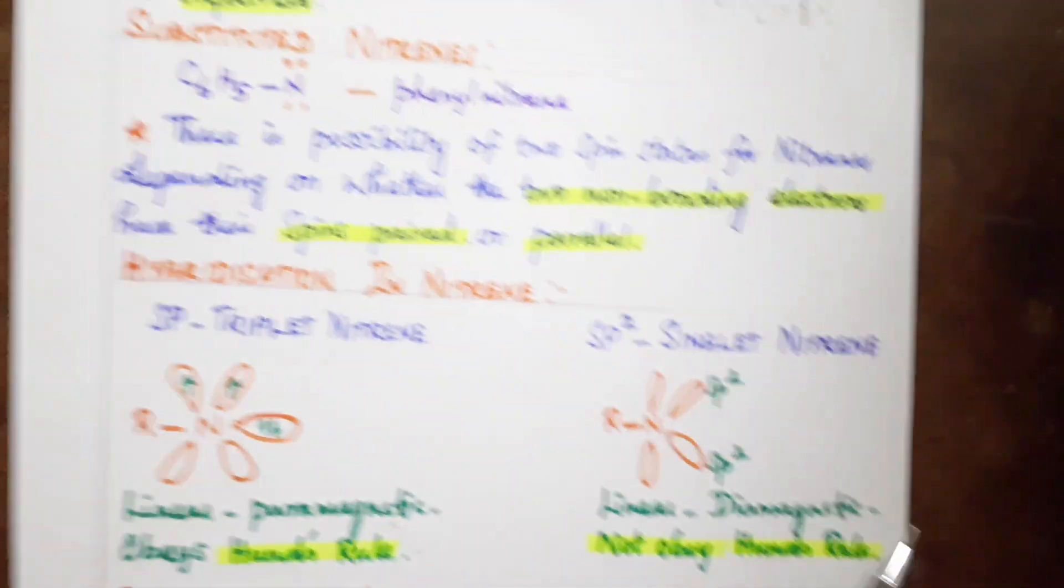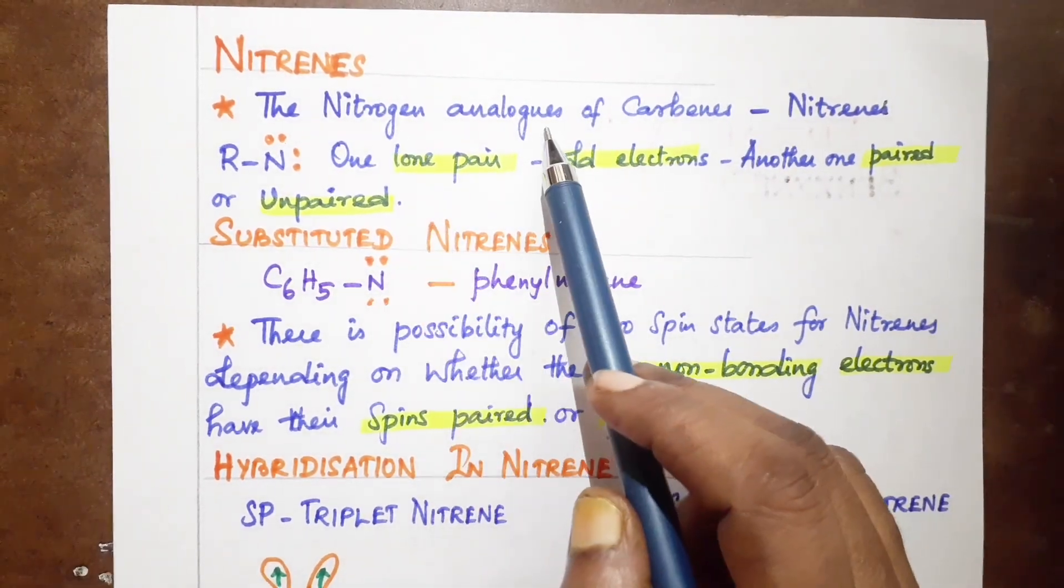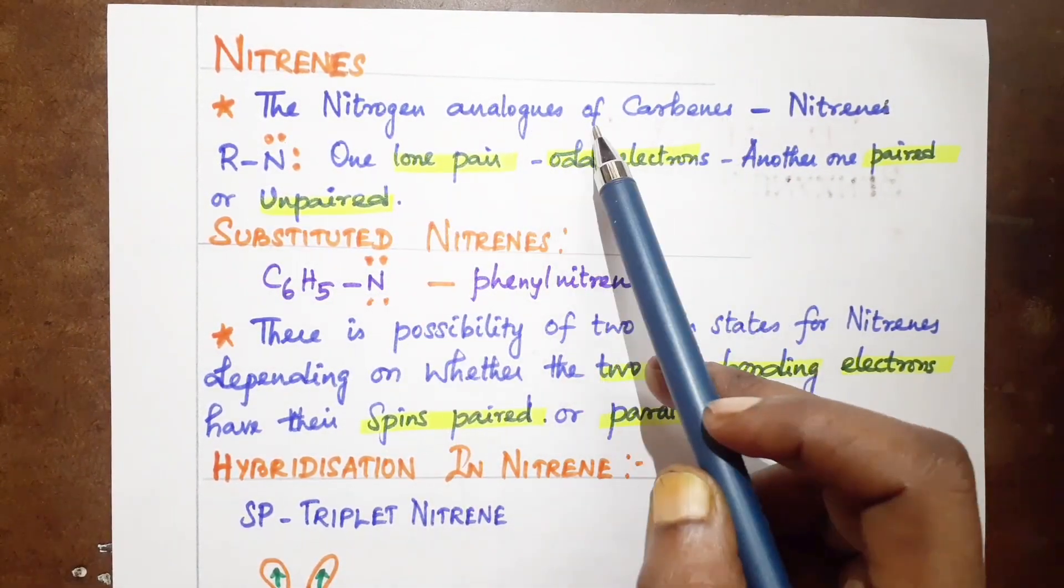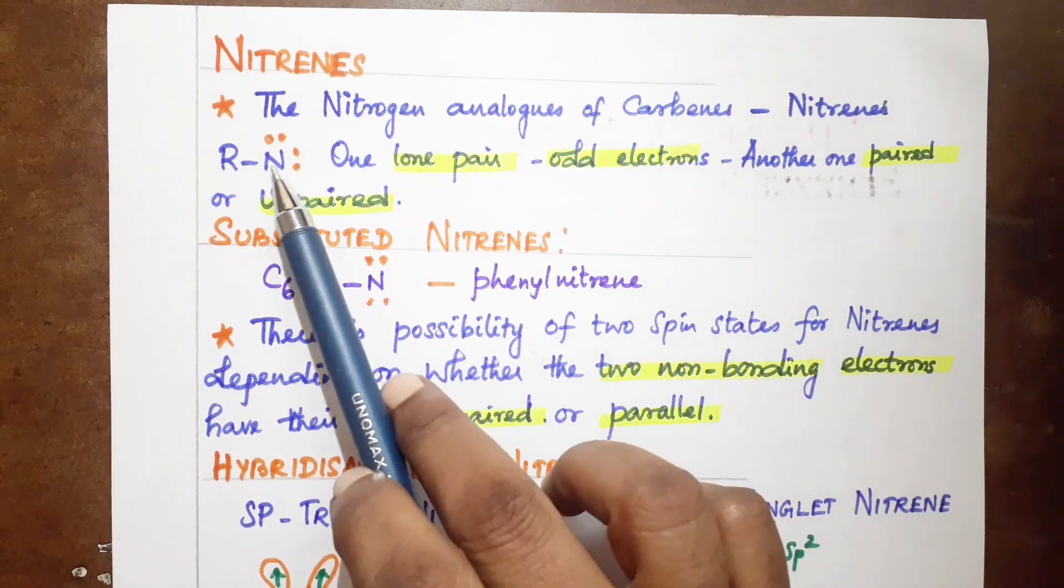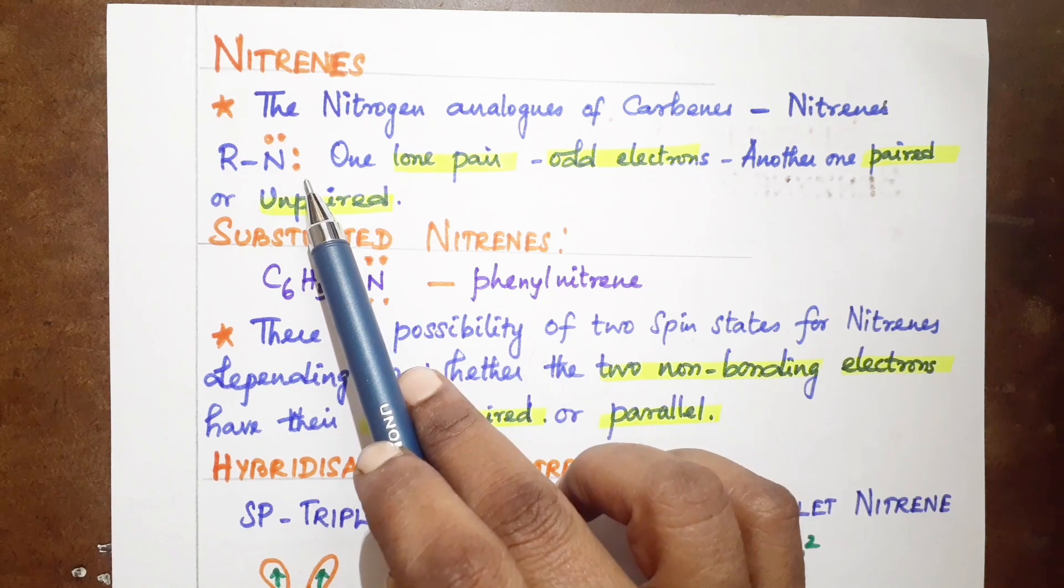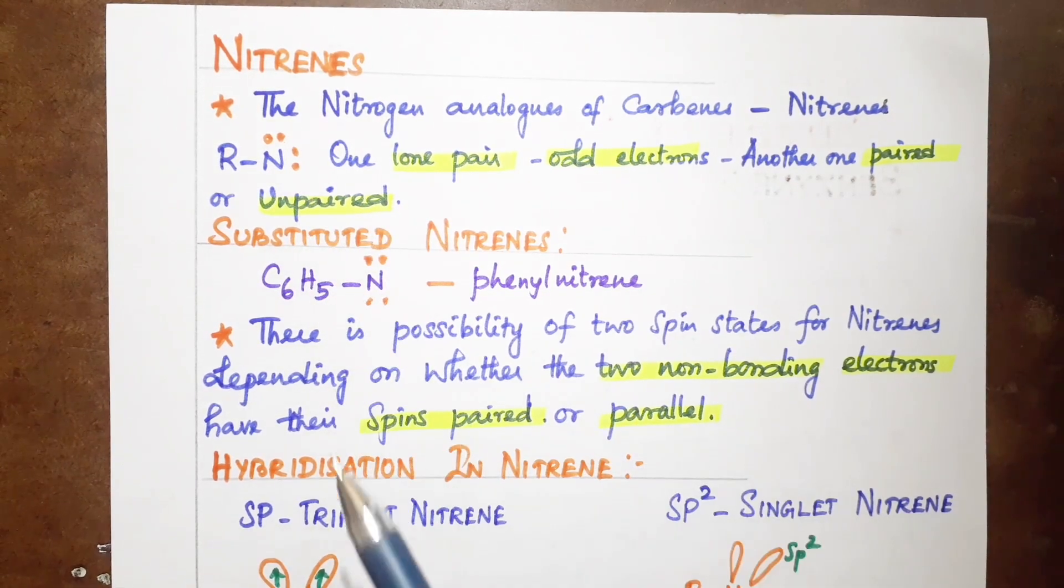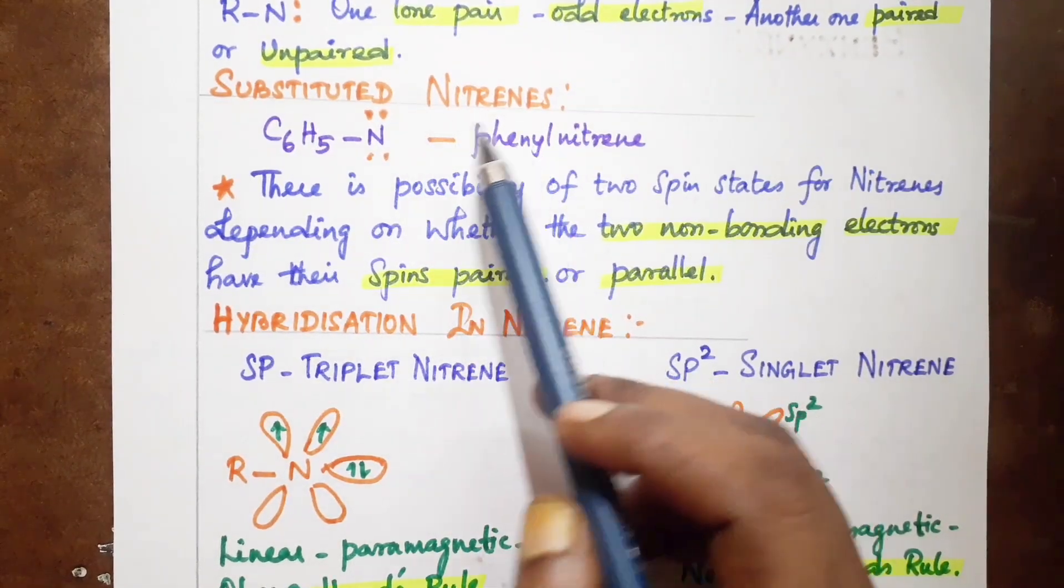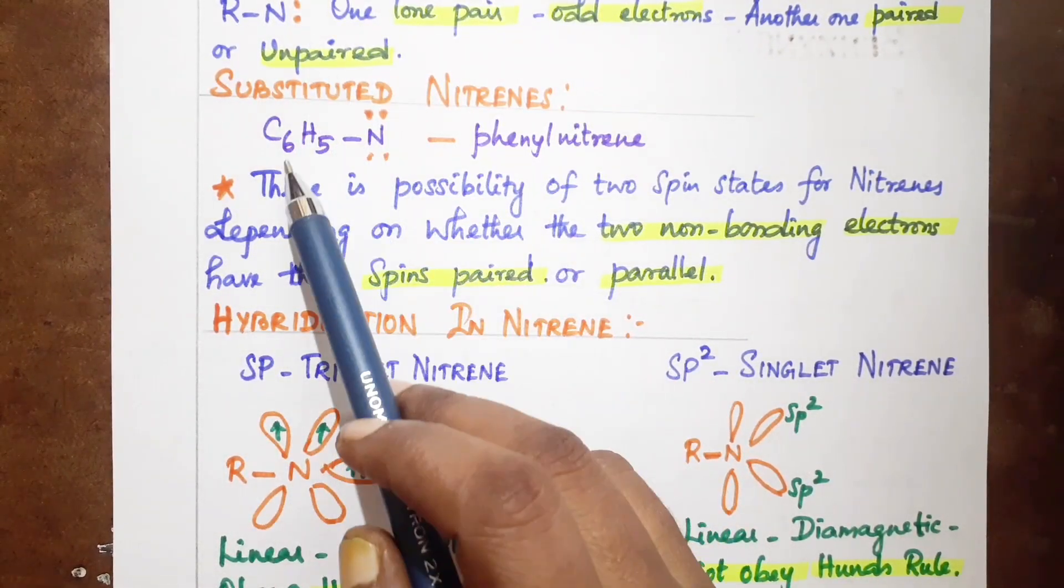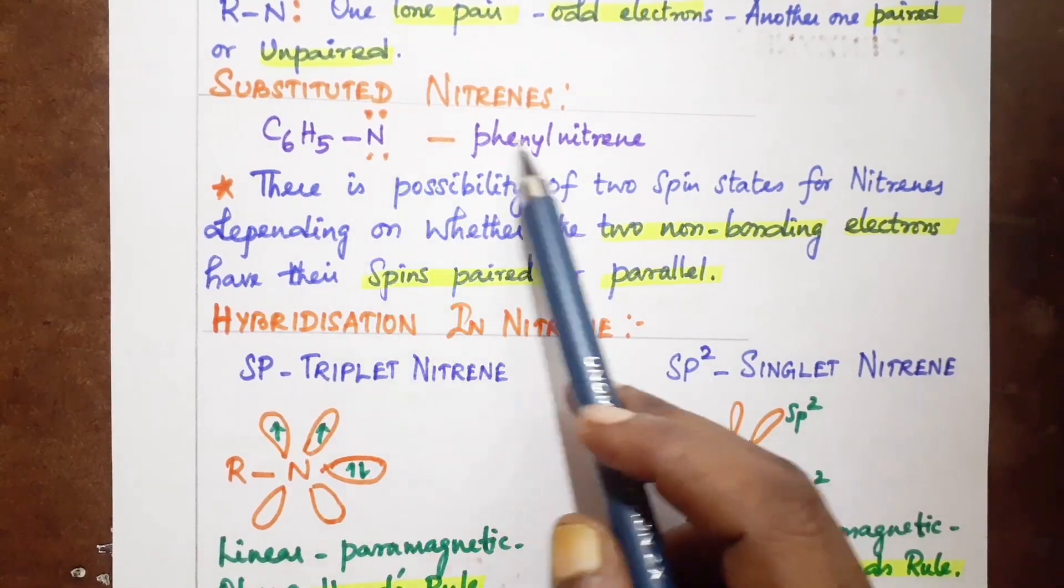Nitrenes: nitrogen analogues of carbenes. R-N with one lone pair of electrons - this lone pair can be paired or unpaired. Substituted nitrenes: C6H5-N is phenyl nitrene, which is a substituted nitrene.